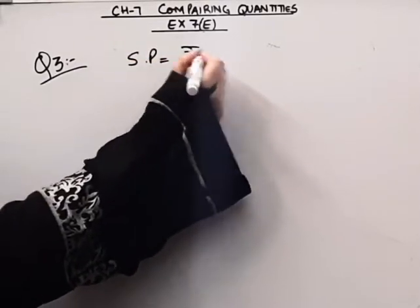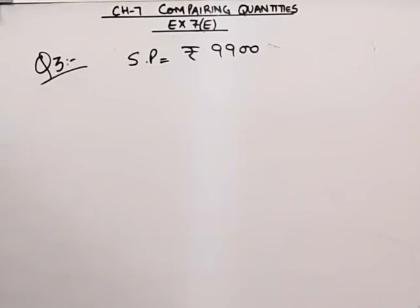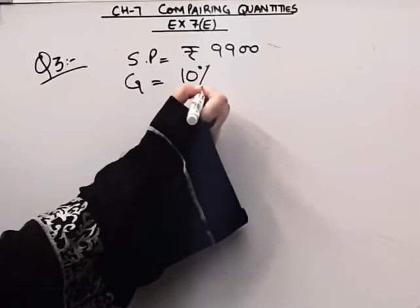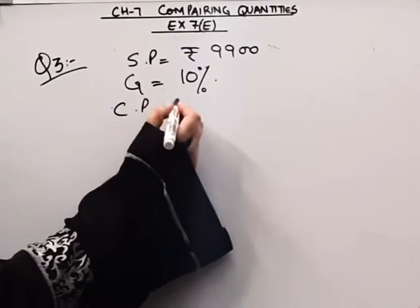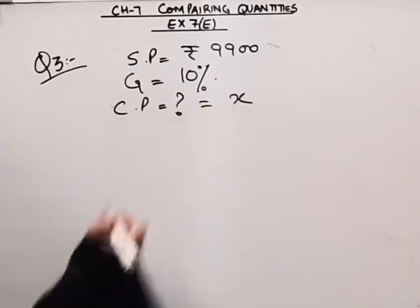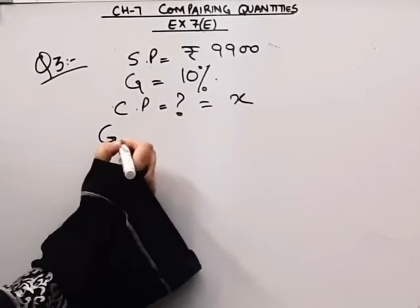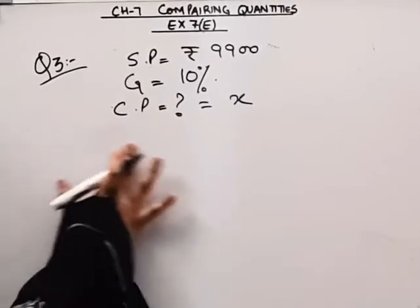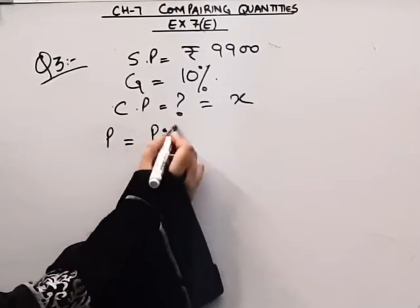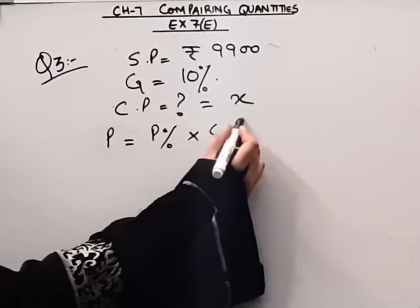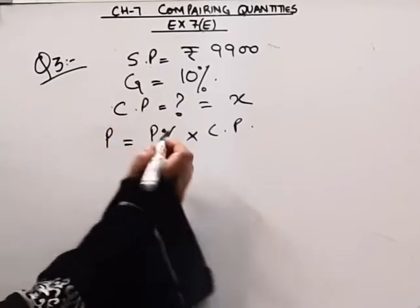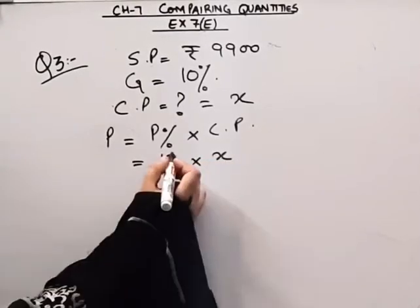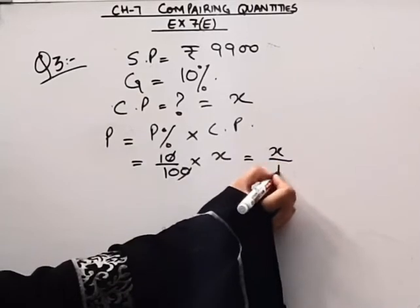The selling price is 9,900 rupees, and he gains 10 percent. We suppose the cost price is x rupees. We know that profit is equal to profit percentage into cost price, so the profit here is 10 upon 100 into x, which gives us x upon 10.